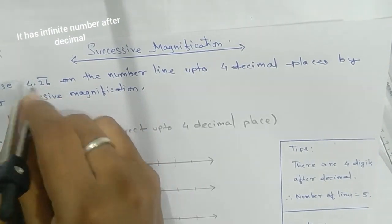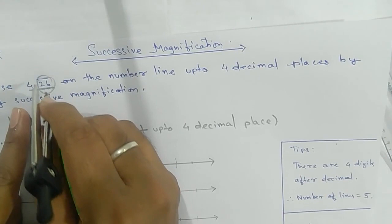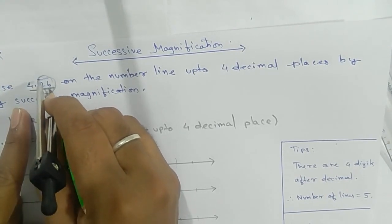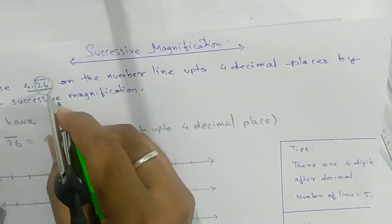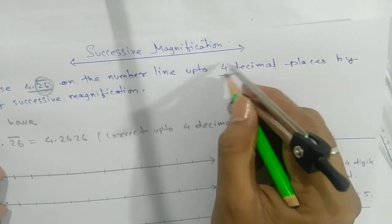It is an infinite number, a non-terminating repeating decimal. You need to see up to how much they are asking. They are asking up to four decimal places.